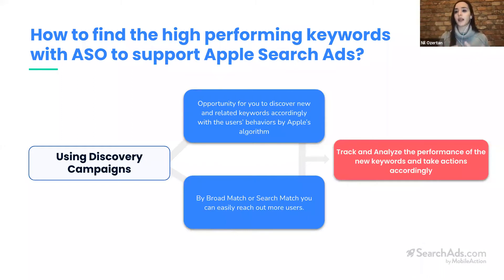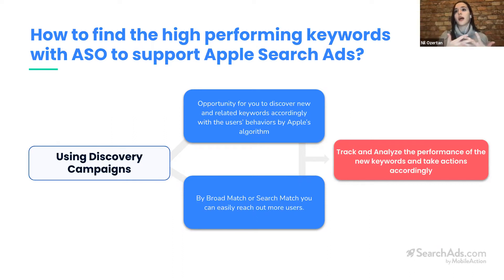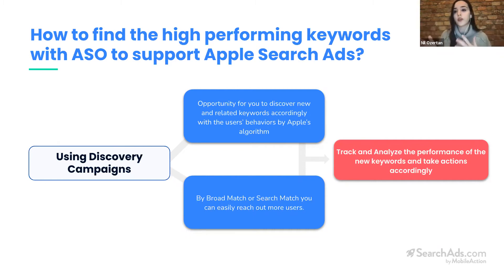By tracking and analyzing the performances of those search terms, you can take actions accordingly. For instance, let's assume you have a promising metric according to your KPIs — of course it differs from one app to another. Let's say you have a promising metric, meaning the search term is meeting your CPA level.